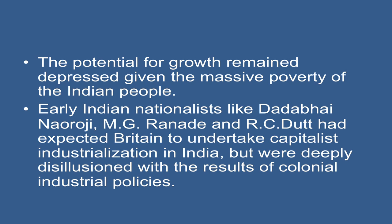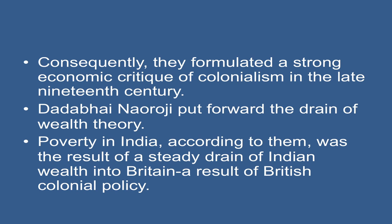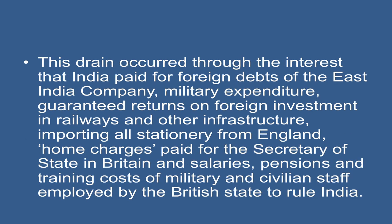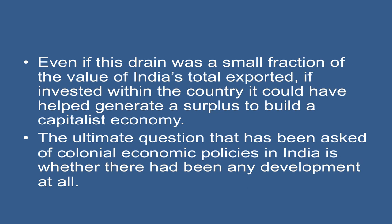To place these markers of success in perspective, on an overall level these developments remained confined to the domestic market, and indigenous capital still had a long battle ahead against the structural weaknesses of a colonial economy. The potential for growth remained depressed given the massive poverty of the Indian people. Early Indian nationalists like Dadabhai Naoroji, M.G. Ranade, and R.C. Dutt had expected Britain to undertake capitalist industrialization in India but were deeply disillusioned with the results. Consequently, they formulated a strong economic critique of colonialism in the late 19th century. Dadabhai Naoroji put forward the drain of wealth theory: poverty in India was a result of a steady drain of Indian wealth into Britain. This drain occurred through the interest that India paid for foreign debts of the East India Company, military expenditure, guaranteed returns on foreign investment in railways and other infrastructure, importing all stationery from England, home charges paid for the Secretary of State in Britain, and salaries, pensions, and training costs of military and civilian staff employed by the British state to rule India.